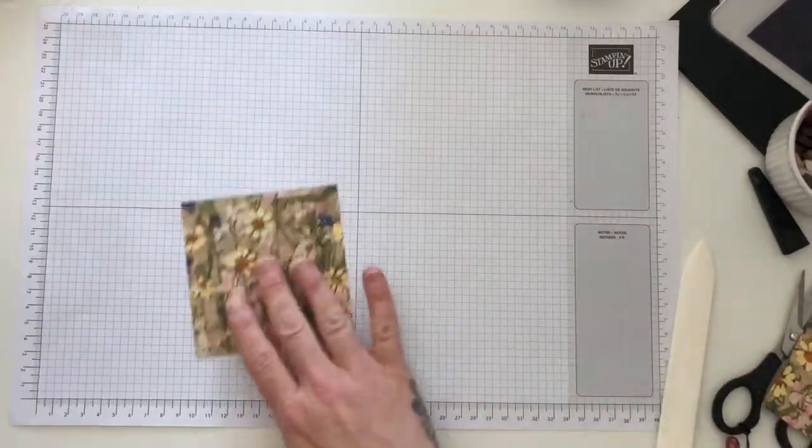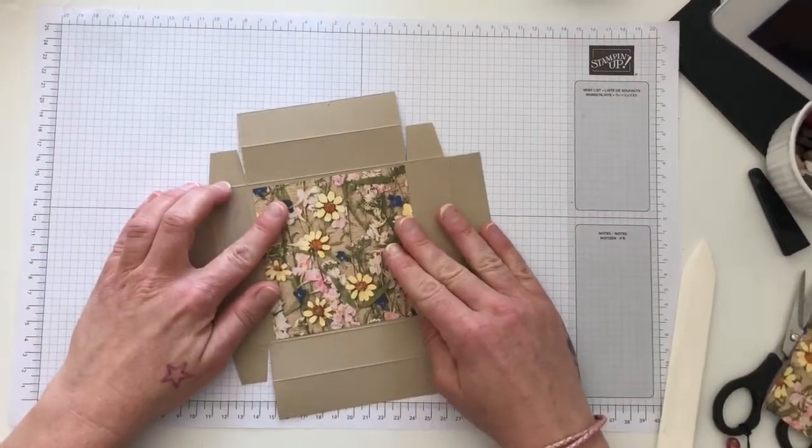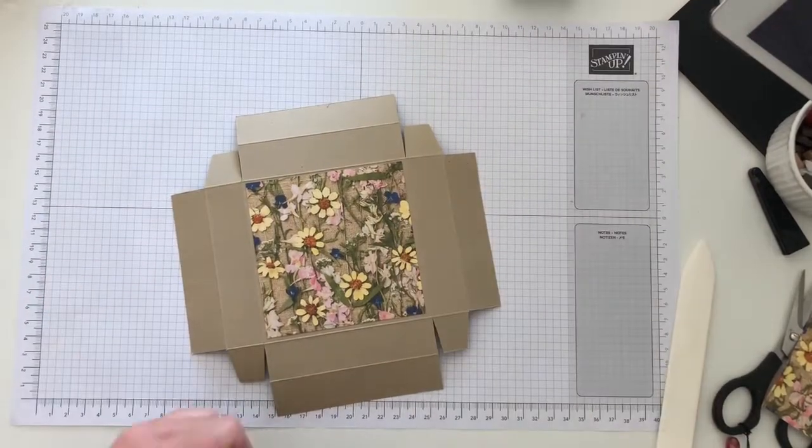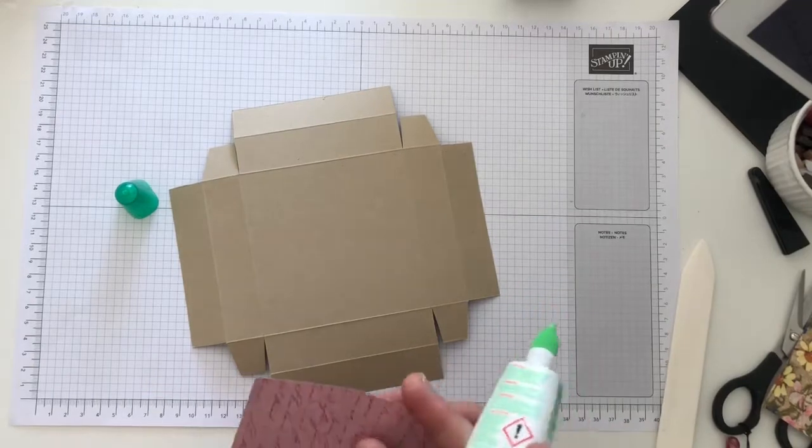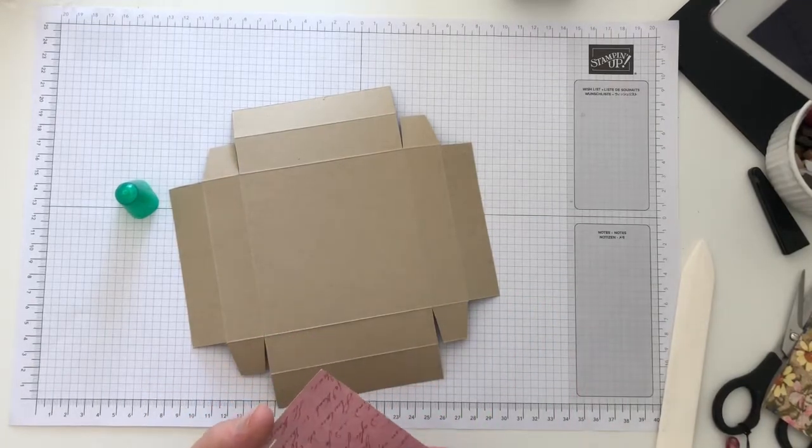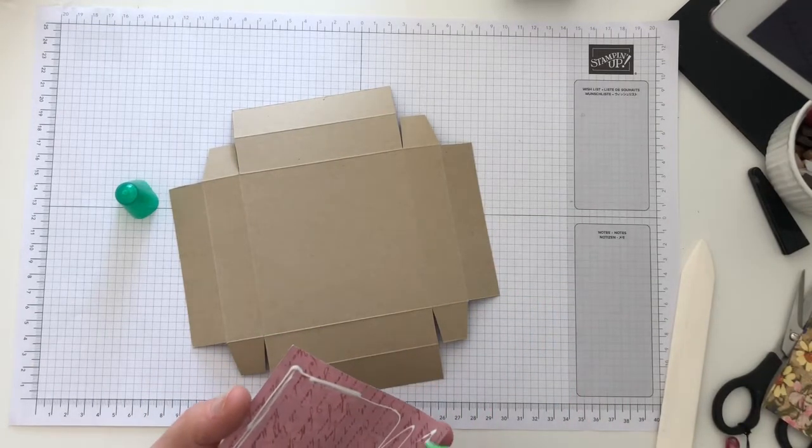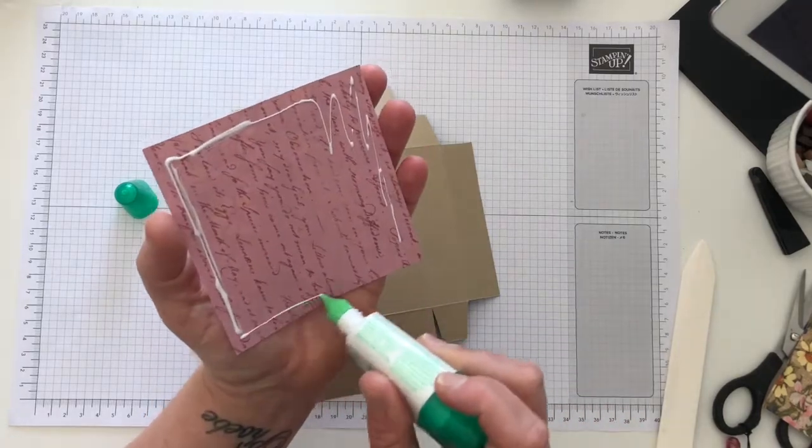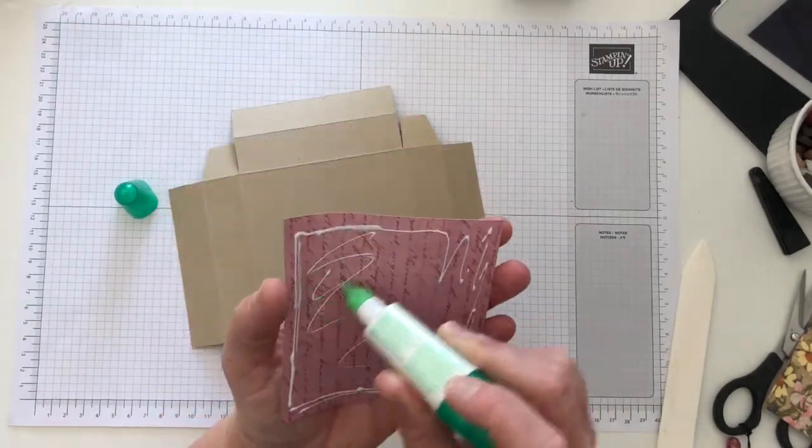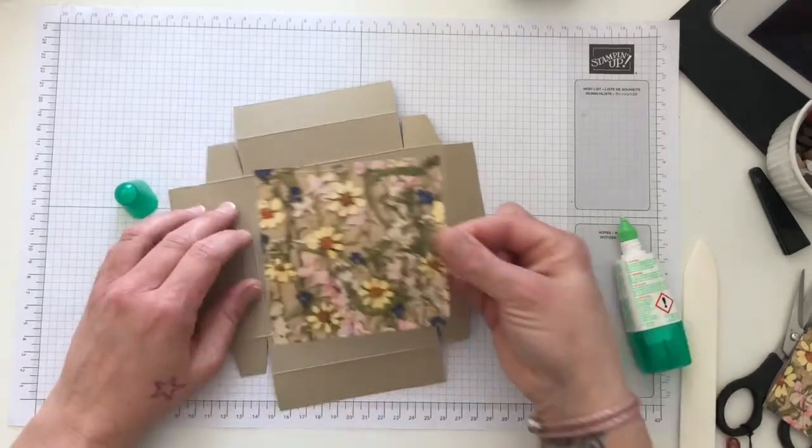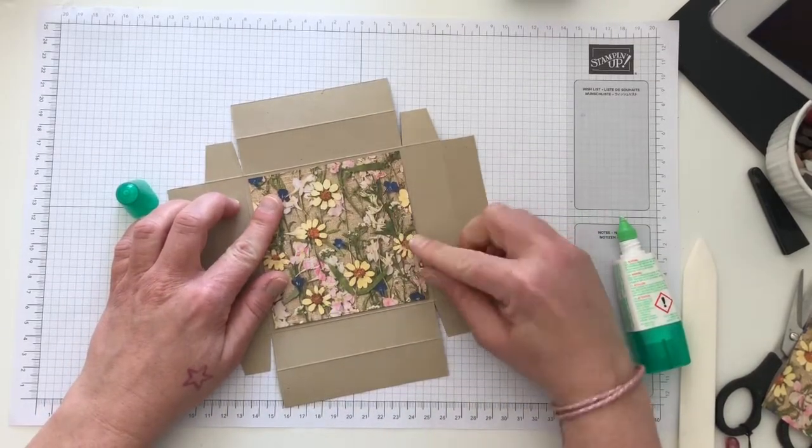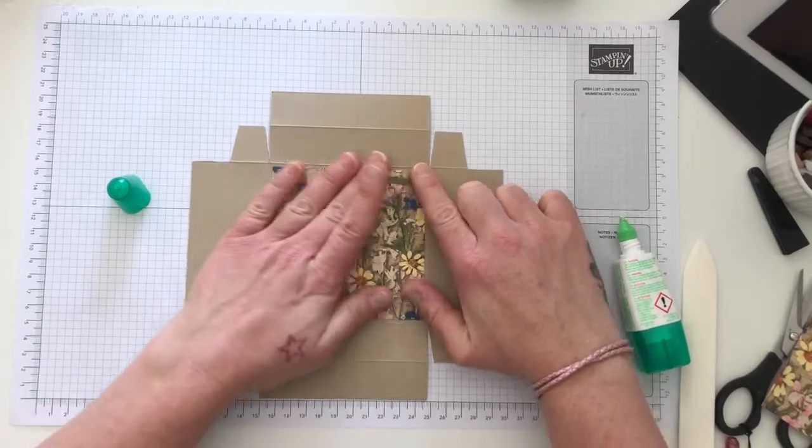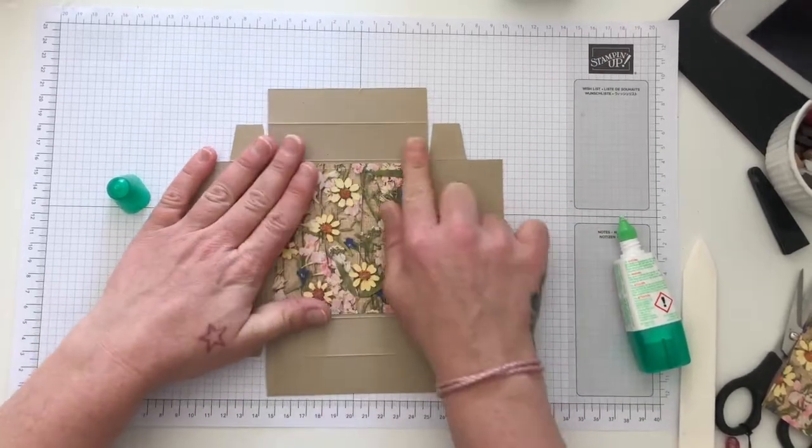And then I'm going to add that to my lid. I just find it easier to do the lid DSP on the lid first. My glue's coming out of there pretty crazy. It is a new one—I treated myself to a new one. I do love it when you start a new glue. So just make sure I'm just lining that up nice and neatly so my borders are all equal all the way around.